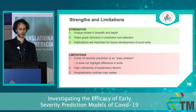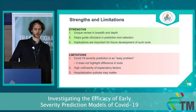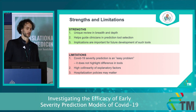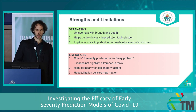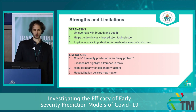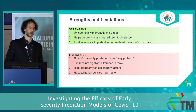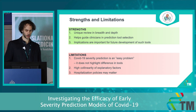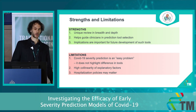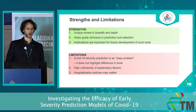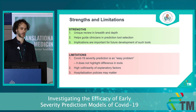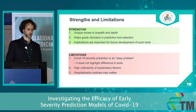The strength of this meta-analysis is its unique breadth and depth, and I think it helps guide clinicians in choosing the right tools, with implications also useful for future tool development. The limitations are that this may not have been the best problem for assessing differences between model types, there is high collinearity of explanatory factors making it hard to disentangle what exactly causes higher or lower classification performance, and hospitalization policies may matter a lot.